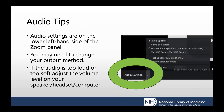You may need to adjust the audio settings. If you have trouble hearing the speakers, audio settings are on the lower left-hand side of the Zoom panel. You may need to change your output method. If you find that the audio is too loud or too soft, adjust the volume level on your speaker, headset, or computer.